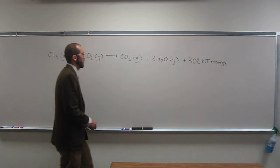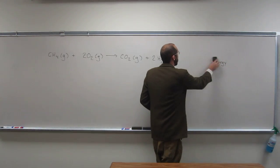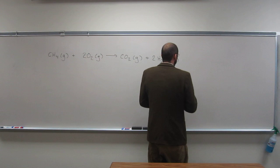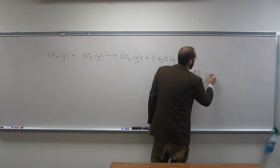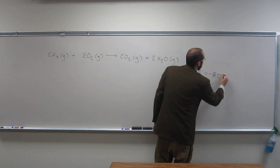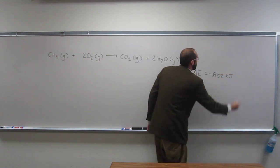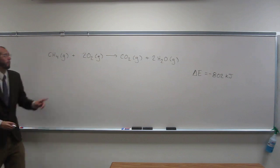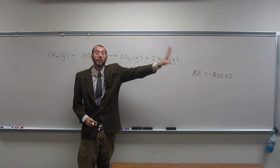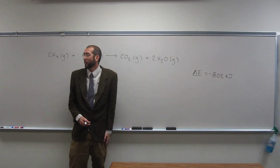So 802 kilojoules of energy is being released. You can think of it like the change in E is negative 802 kilojoules. Why is it negative? Because it was a product, right? And if it's a product, that means it's being released. Is everybody okay with that?